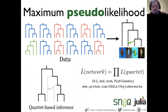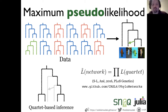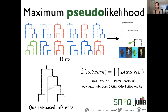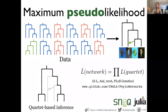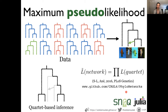An audience member asked whether the quartets are treated as rooted or unrooted. We use unrooted quartets, and everything — including the final inferred networks — is unrooted, which I'll clarify in the next slide. We implemented the pseudo-likelihood approach in the Julia package PhyloNetworks, which we found very easy to code and highly scalable and efficient.